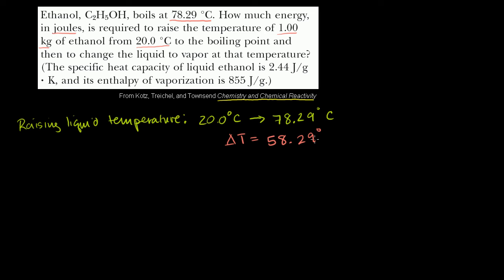Well, 78.29 minus 20 is 58.29. So our change in temperature is equal to 58.29 degrees Celsius.